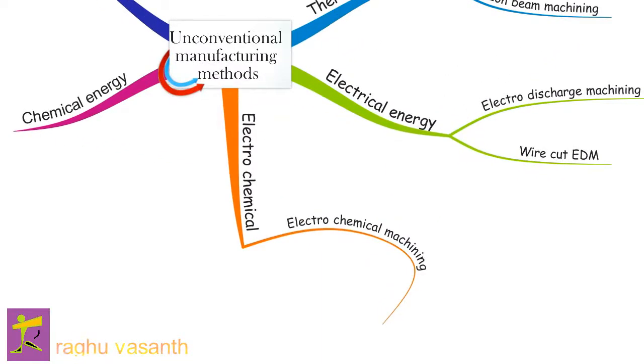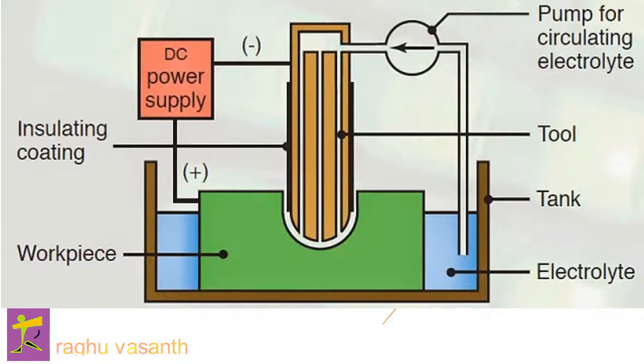ECM resembles electroplating in reverse. In this process metal is dissolved from a workpiece with direct current at a controlled rate in an electrolytic cell. The workpiece serves as the anode, the tool serves as the cathode. The electrolyte, usually an aqueous salt solution, is pumped under pressure through the inter-electrode gap, thus flushing away metal dissolved from the workpiece. As one electrode moves toward the other to maintain a constant gap, the anode workpiece is machined into a complementary shape.